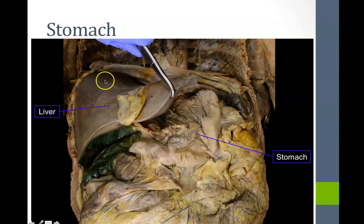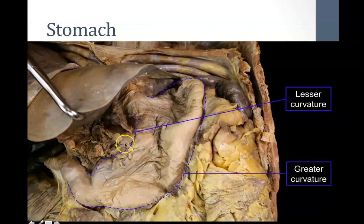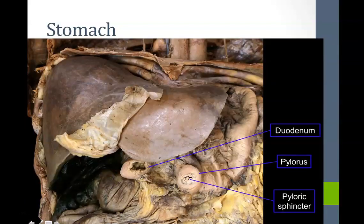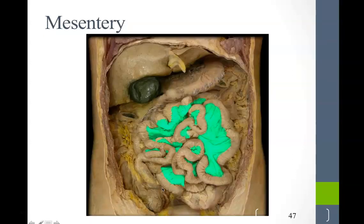On the left portion of the stomach we have the greater curvature, where the greater omentum attaches. On the right side is the lesser curvature, which serves as an attachment for the lesser omentum. This is a nice cut through the pylorus showing the pyloric sphincter before we head into the duodenum, and we may have a stomach cut open to see those gastric folds or rugae.